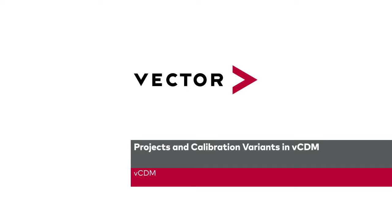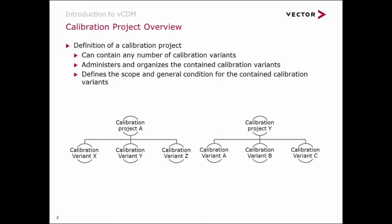Let's start with the question: what is a calibration project? A project is a container for various calibration variants. There can be any number of variants created within a calibration project. A project defines all settings for the included child objects.